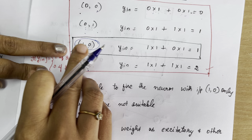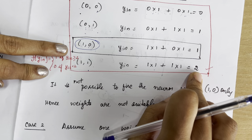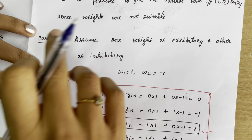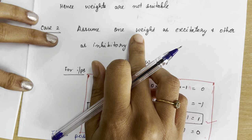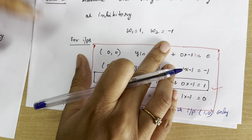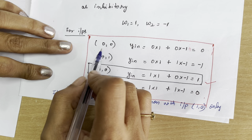For the AND-NOT function, the neuron should fire only for input (1,0); for all other cases the output should be 0. The weights w1 = w2 = 1 do not satisfy this requirement. That is why we proceed to Case 2 and assume different weights — one excitatory and one inhibitory.